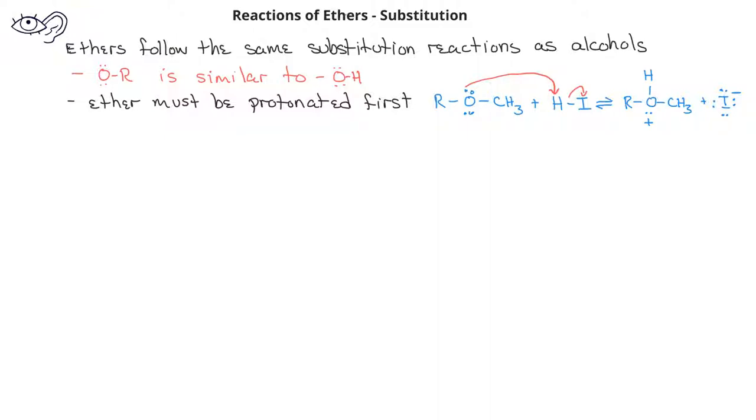If the oxygen in the ether is bonded to a secondary or tertiary carbon, then the ether will follow the typical SN1 mechanism for the substitution reaction.